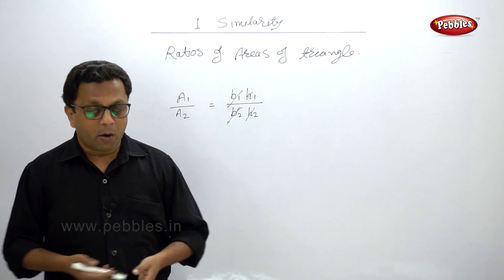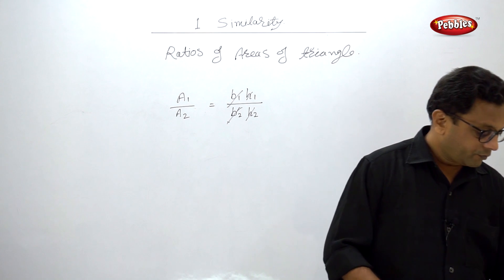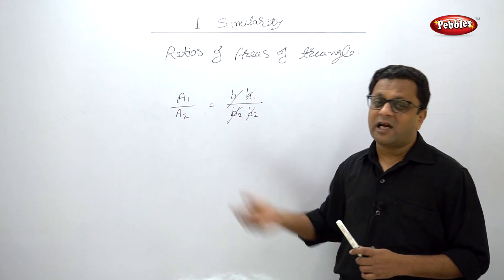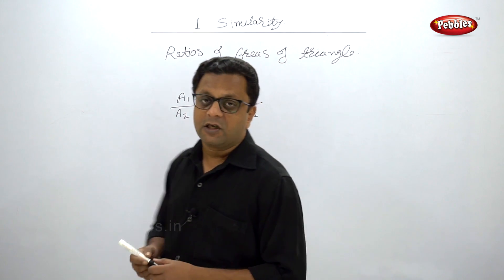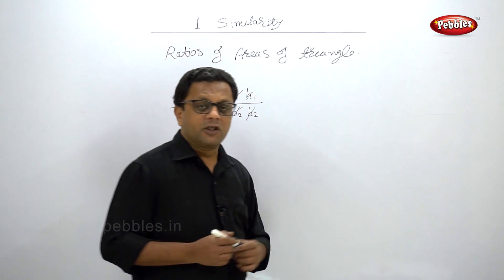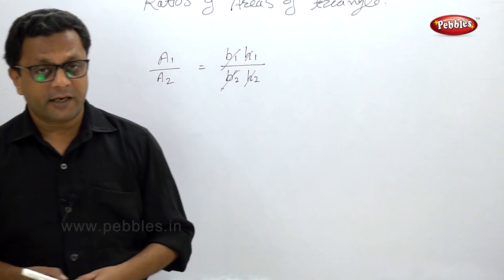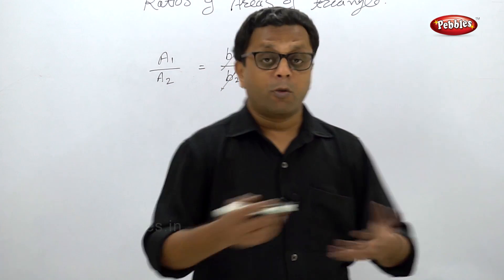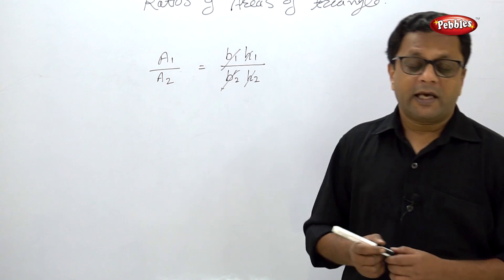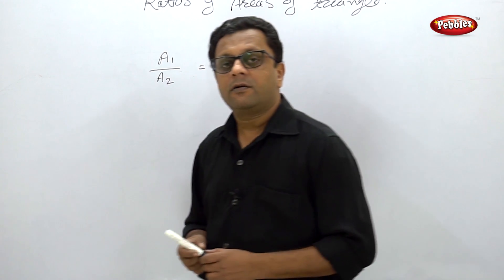The problems based on this are given in Exercise 1.1 and we are going to solve them. I don't think trial or sample examples are required here because the property is very straightforward. Just remember: find the base and height, or decide whether the base, height, or both are common in the given figure. So let us directly go to Exercise 1.1. Thank you very much.